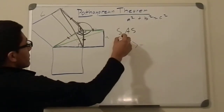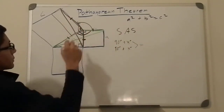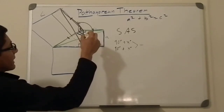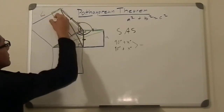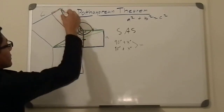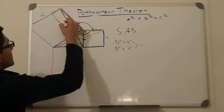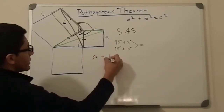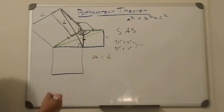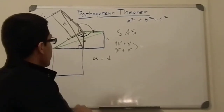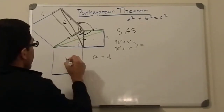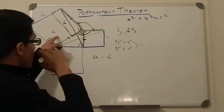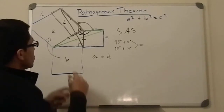Therefore, we can conclude that the two triangles are congruent and have the same area, and we can conclude that area A equals the area of this quadrilateral — let's call it D. So the area of A equals the area of D. The same argument can be done for area B equaling the area of another region — let's call it E — though I won't go through that in detail, but you could.